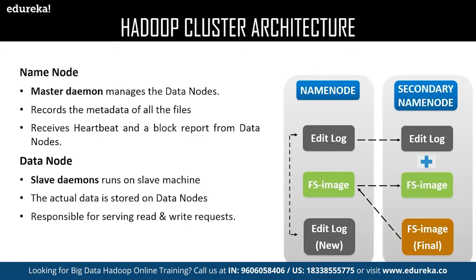The last one is the Secondary NameNode. The Secondary NameNode, as its name suggests, is not actually a backup of the NameNode. Instead, it acts as a buffer which saves the latest updates to the FS image obtained in the intermediate process and finally updates them to the final FS image.